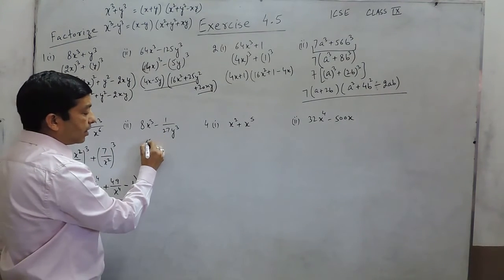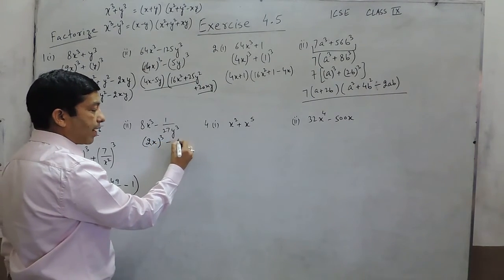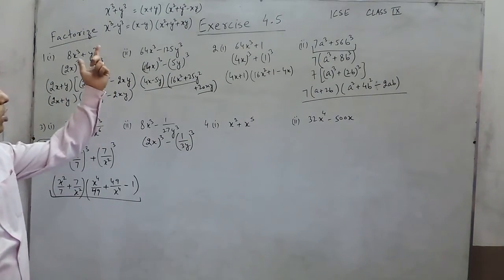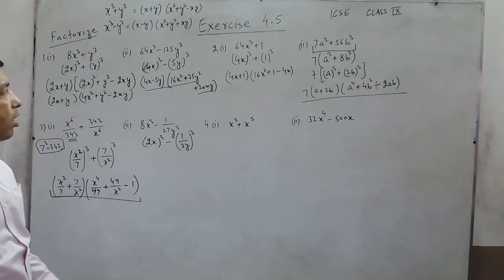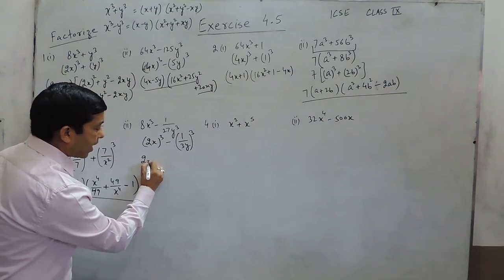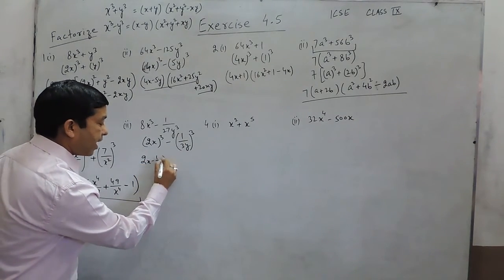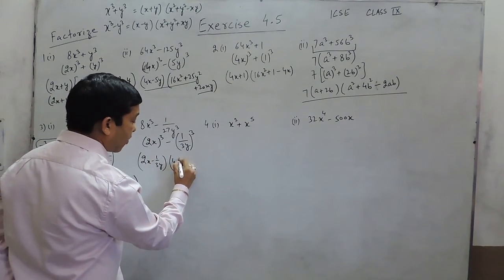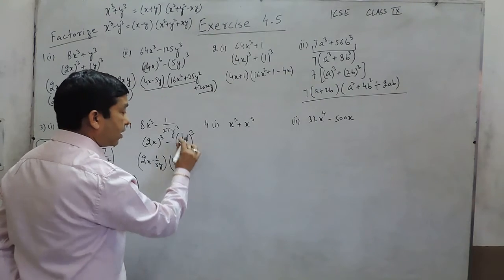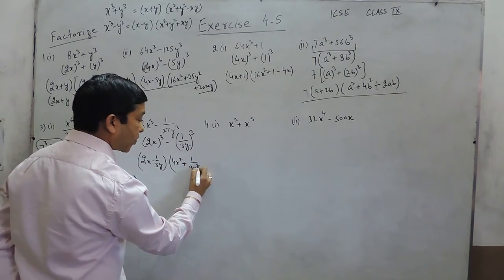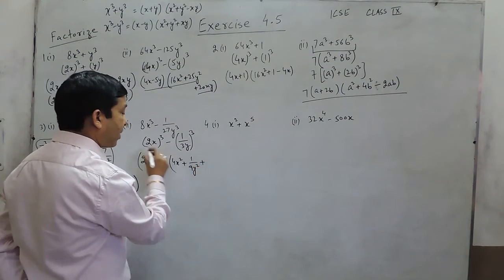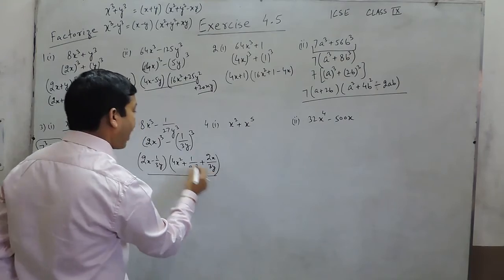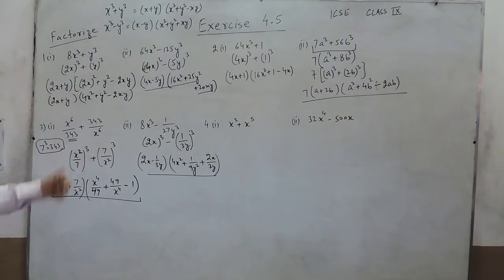For the next part, we have (2x)³ minus (1/3y)³. Using the identity for x³ minus y³, the first factor is (2x − 1/3y). The second factor is: first term squared is 4x², second term squared is 1/9y², and the product of the two terms is 2x/3y, making it positive. So this is the factorization of part 2 of question number 3.